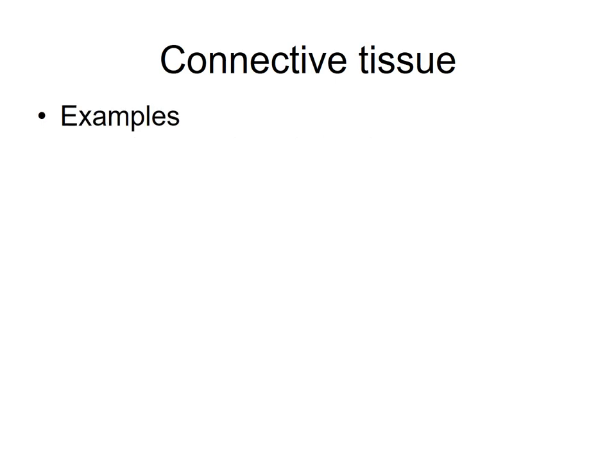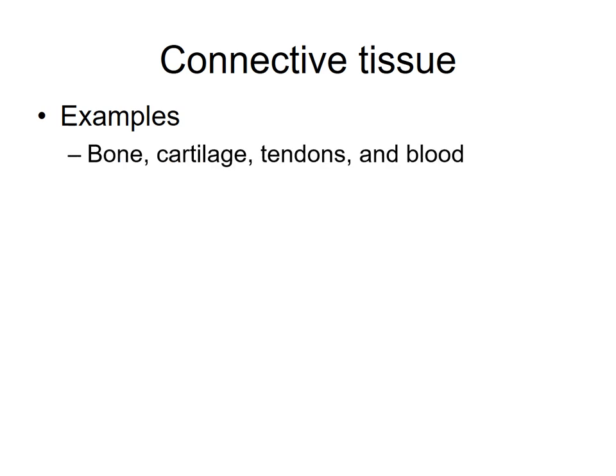Hopefully you did the reading prior to watching this screencast. So what are some examples of connective tissues, or organs that are composed primarily of connective tissues? Bone is composed primarily of connective tissue, as is cartilage. Tendons, which connect muscles to bone, are composed of connective tissue, as are ligaments, which connect one bone to another. And blood — blood is a connective tissue.